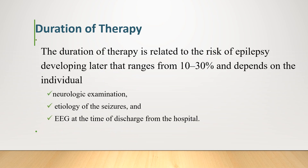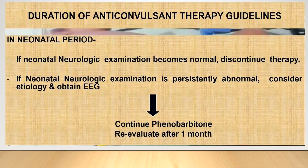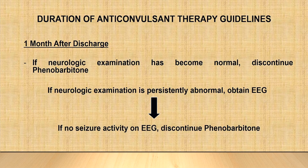Regarding the duration of anti-epileptic drugs, the duration is related to the risk of epilepsy, which ranges from 10 to 30%, and depends on neurologic examination, etiology, and EEG findings at discharge. In the neonatal period, if the neurologic examination becomes normal and seizures stop, discontinue therapy immediately. If the neurologic examination is persistently abnormal, consider EEG and continue phenobarbitone, then reevaluate after one month. After one month, if neurologic examination has become normal, discontinue phenobarbitone. If still abnormal, obtain EEG, and if no seizure activity is shown, discontinue phenobarbitone.